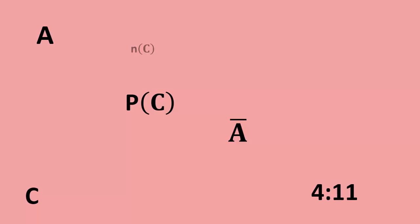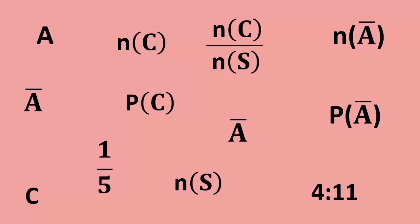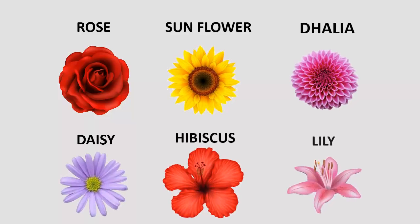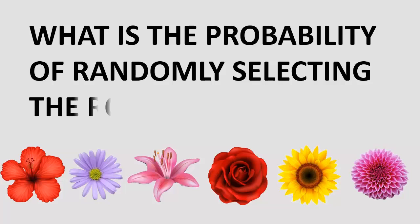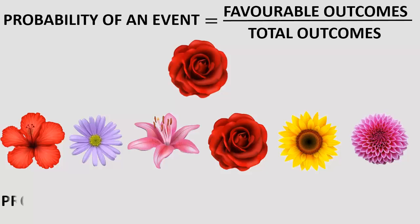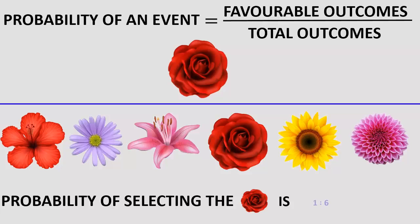In this video, let us learn about the relationship between the odds and the probability by an example. For this, let us take six different flowers. What is the probability of randomly selecting the rose flower? We know that probability equals the favorable outcomes by the total outcomes. The probability of selecting the rose from the six flowers is 1 is to 6, that is 1 by 6.